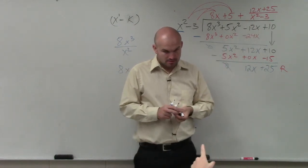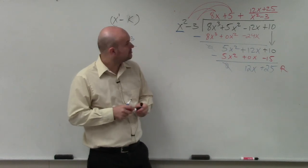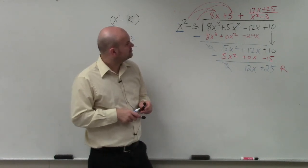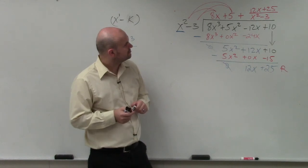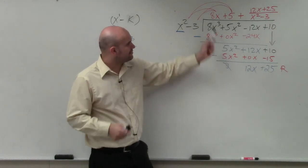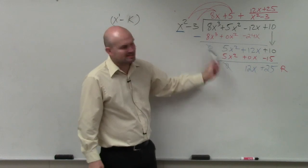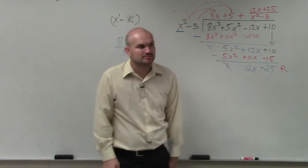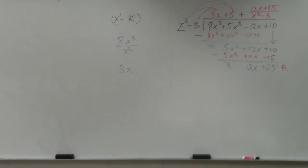Student asks: So whenever we get the 8x at the top for the answer, we would cross the 8x³ out. We'd minus it from the 8x³ in the problem, just so we don't have to deal with that anymore and make it a 0? Like every time? Teacher responds: Yeah, you always get the same. Whatever answer you get, when you multiply it by the first term, you should always have it cancel out or add to 0. Always. And if it doesn't, then you didn't divide right.